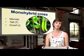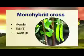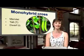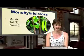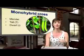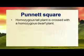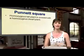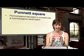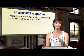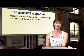Mendel looked at tall pea plants and dwarf or short pea plants. The tall pea plant is represented by the allele capital T, and the dwarf pea plant by lowercase t. Capital T is dominant — it is the boss. We are going to cross two pea plants: a homozygous tall plant, with genotype TT, crossed with a homozygous dwarf plant, with genotype tt — meaning both plants have the same two alleles.